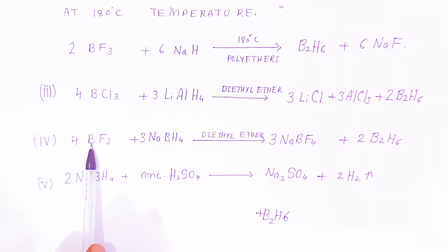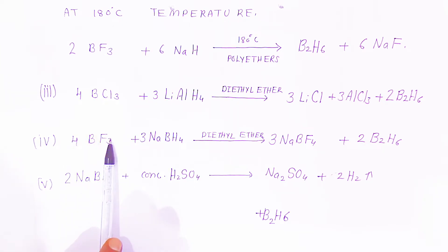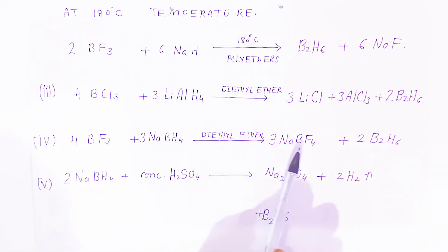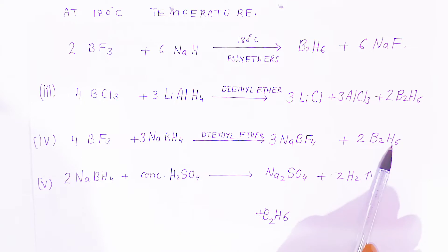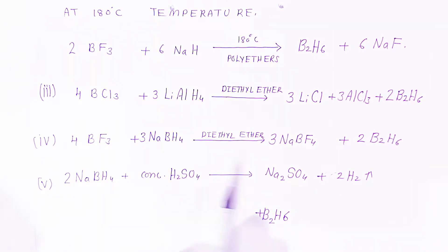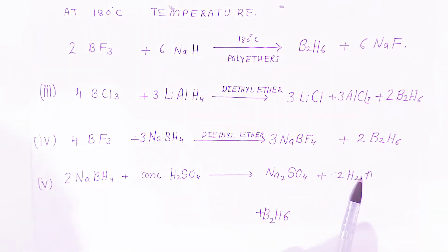The fourth preparation: four molecules of boron trifluoride react with three molecules of sodium borohydride in the presence of diethyl ether, giving sodium boron fluoride and diborane. Additionally, sodium borohydride can react with concentrated sulfuric acid, giving sodium sulfate, with elimination of hydrogen gas, to yield diborane.